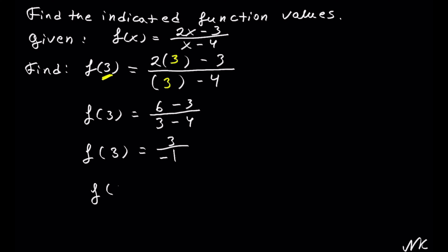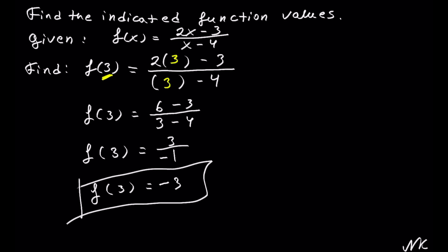So f of 3 is equal to 3 divided by negative 1. Positive divided by negative gives a negative. 1 goes into 3 three times, so f of 3 is equal to negative 3.